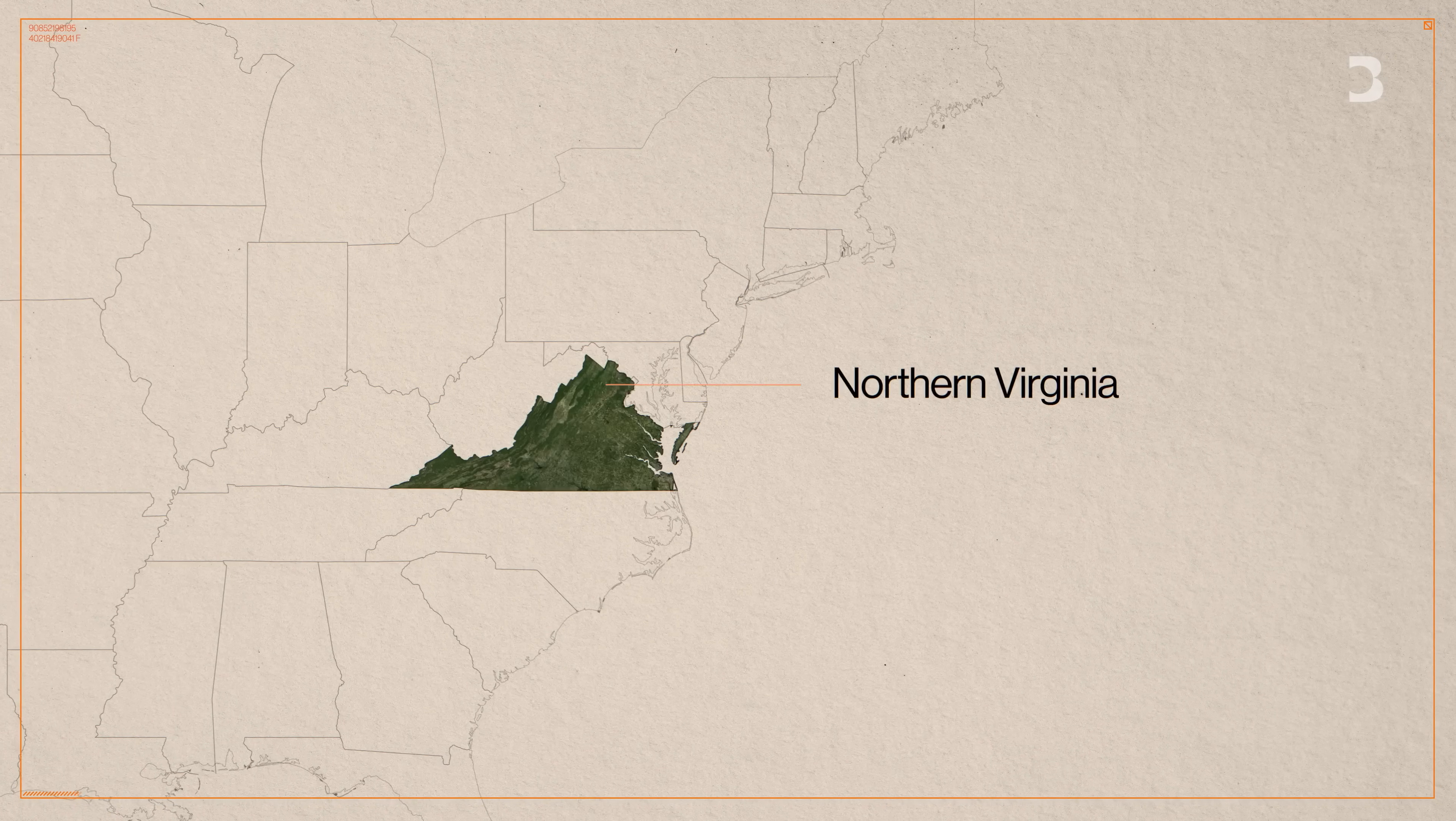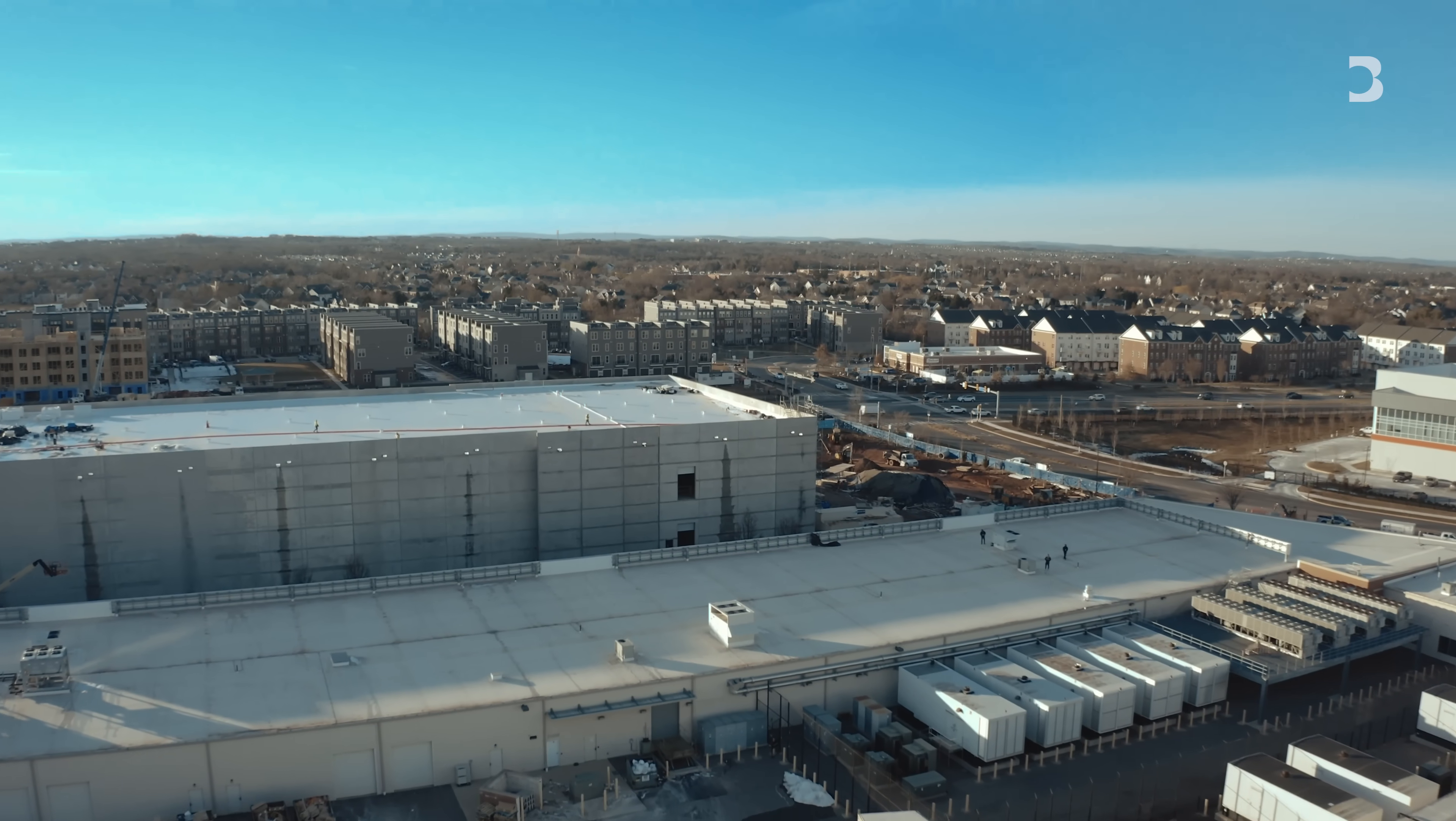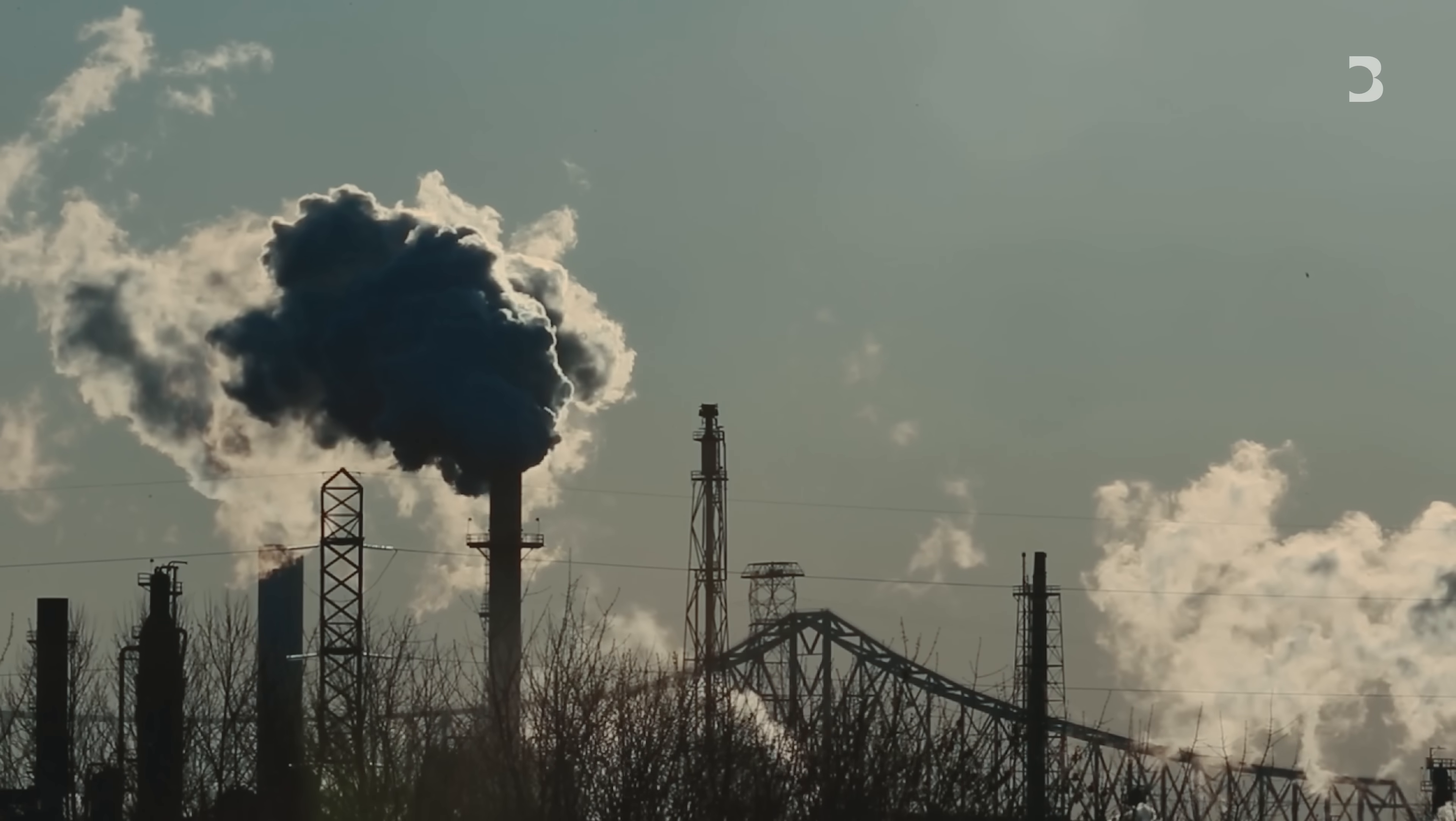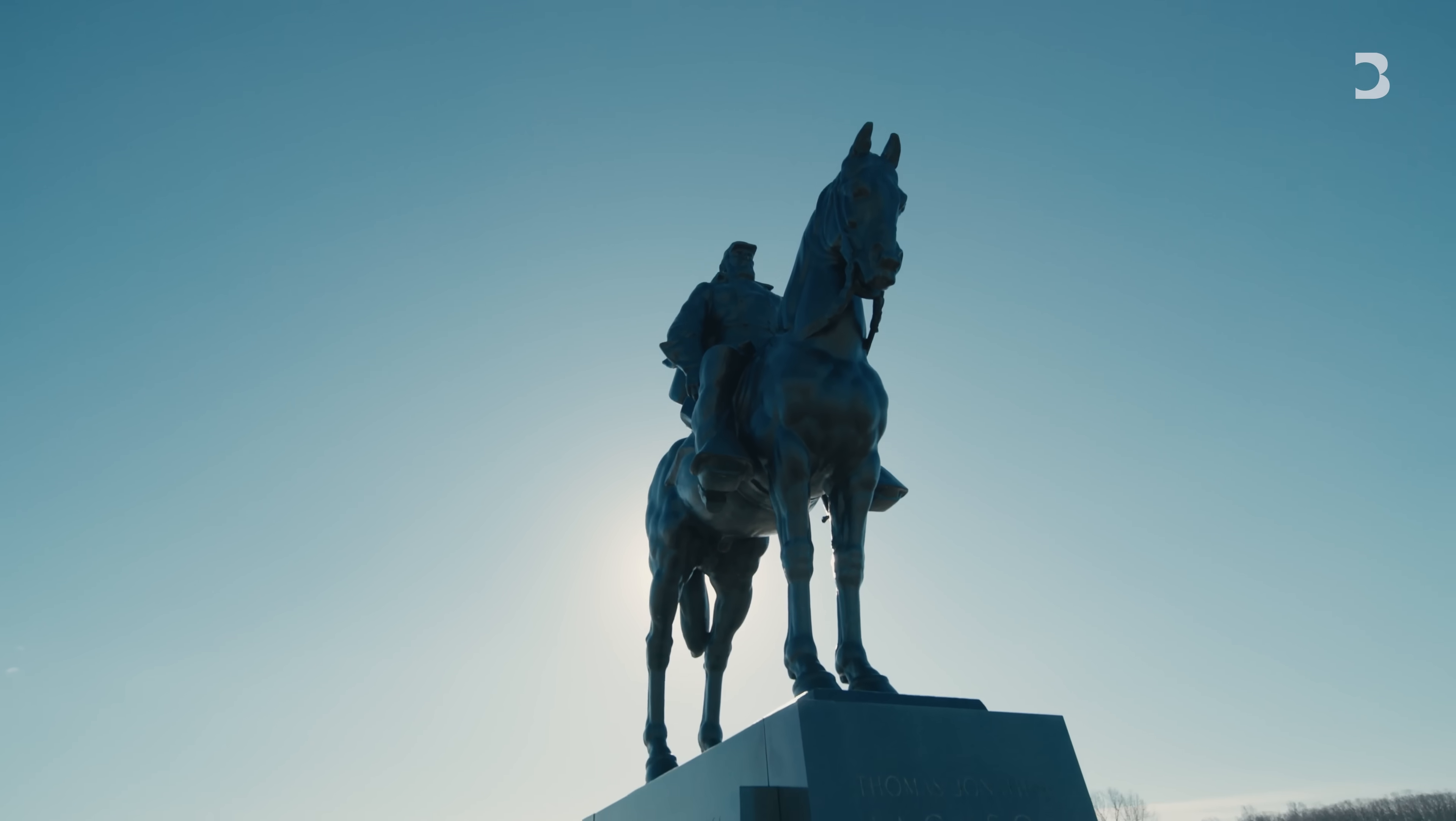We're here in Northern Virginia because it's the red-hot center of data center development in the entire world. About 13% of data centers globally are here. A full quarter of the data centers in the U.S. are right around us here in Northern Virginia. If you care about the reliability of the electric grid, climate goals, like shutting down coal plants, if you care about the development of AI, all of that is happening right around us. If we can't figure out how to get it right here, how are they going to get it right anywhere else?